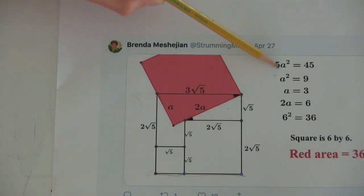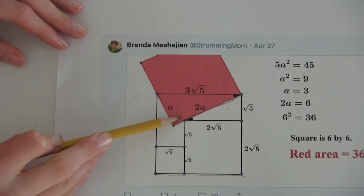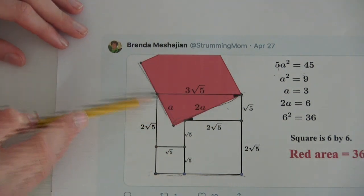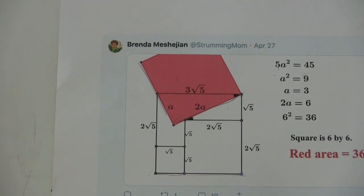Dividing by 5, a squared equals 9, and a equals 3. And then from that, you just find this side of the triangle, which is also the side length of the red square, and that's 6, and 6 squared is 36, so the red area is 36.